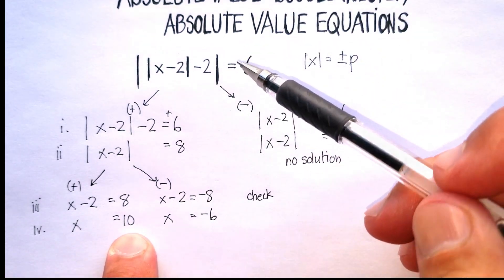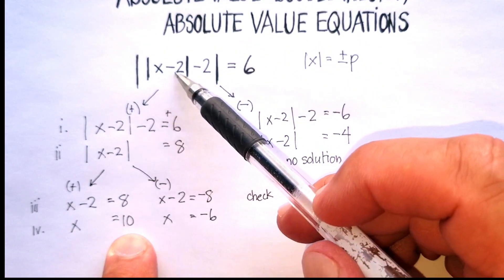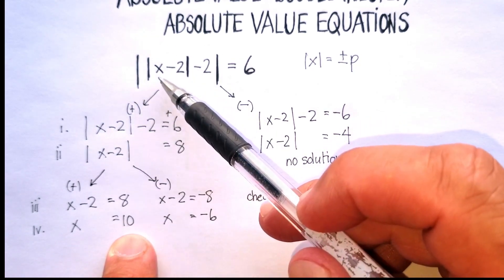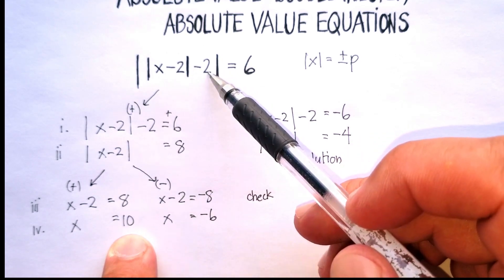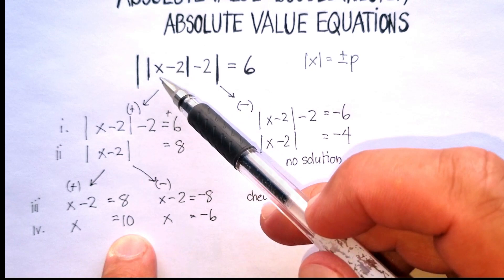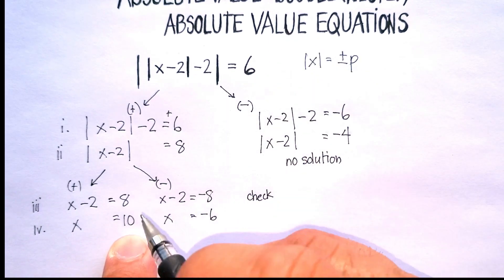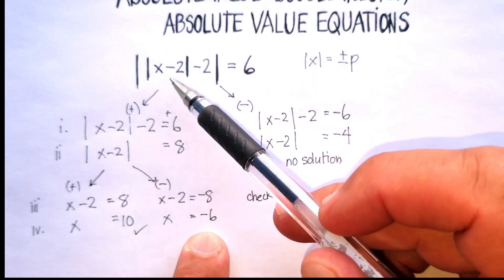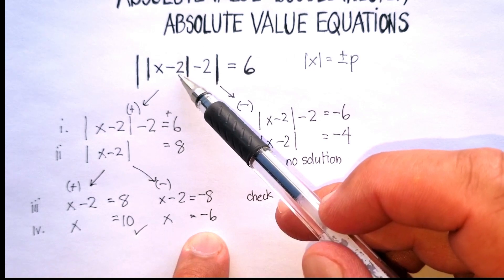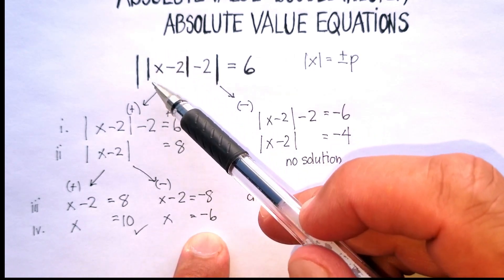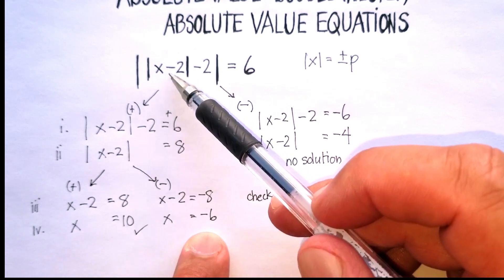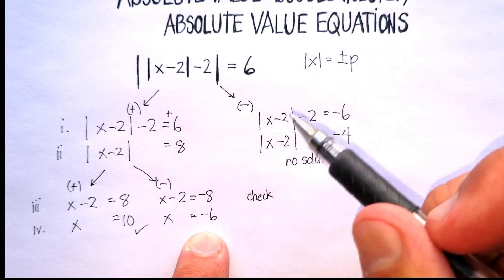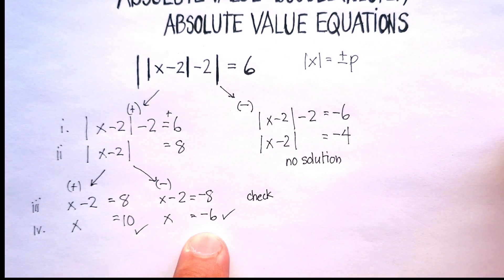Let's try positive 10. 10 minus 2 is 8. The absolute value of 8 is 8. 8 minus 2 is 6, and the absolute value of 6 is indeed 6 — so this works perfectly. Let's try negative 6. Negative 6 minus 2 is negative 8, but the absolute value of negative 8 is 8. So 8 minus 2 is 6, and the absolute value of 6 is still 6. Both of these actually check out.